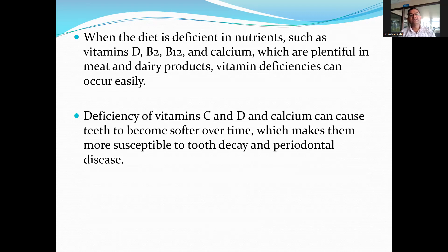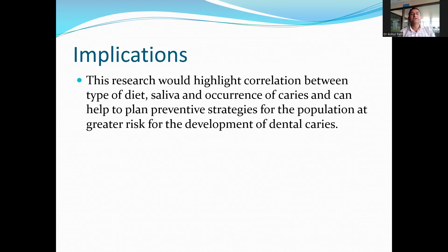When the diet is deficient in nutrients like vitamins D, B, B12, B2, and calcium — which are plentiful in the non-vegetarian diet — vitamin deficiencies can occur easily in vegetarians. Deficiencies of vitamins C and D and calcium can cause teeth to become softer over time, making them more susceptible to tooth decay and periodontal diseases. In conclusion, this research highlights the correlation between type of diet, salivary properties, and the occurrence of dental caries, and can help plan preventive strategies for the population at greater risk for the development of dental caries.